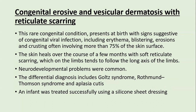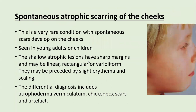Congenital erosive and vesicular dermatitis with reticulate scarring is a rare condition present at birth with signs suggestive of congenital viral infection — erythema, blistering, erosions, and crusting involving more than 75% of the skin. As it heals over a month, it leaves soft reticulate scarring on the limbs along the long axis. Neurodevelopmental problems occur and differential diagnosis includes Gould syndrome, Rothmund-Thomson syndrome, and aplasia cutis. Such infants are successfully treated by silicone sheet dressing.